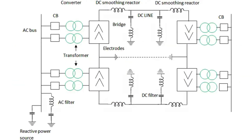The components of the HVDC transmission system include converters — the AC to DC and DC to AC conversion are done by the converters, which include transformers and valve bridges. Another component is smoothing reactors: each pole consists of smoothing reactors, which are inductors connected in series with the pole. They are used to avoid commutation failures occurring in inverters, reduce harmonics, and avoid discontinuation of current for loads.